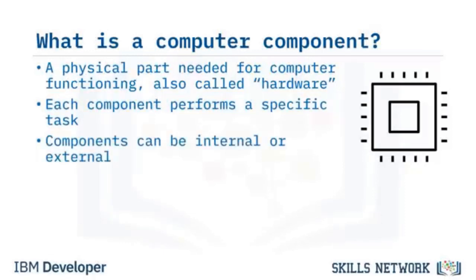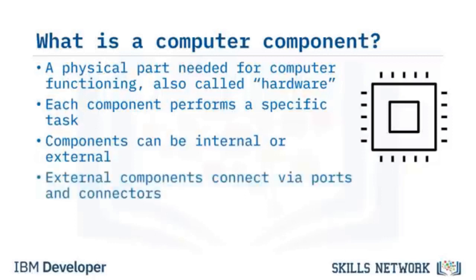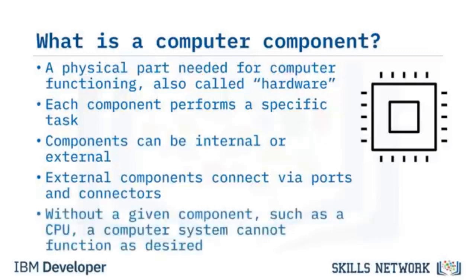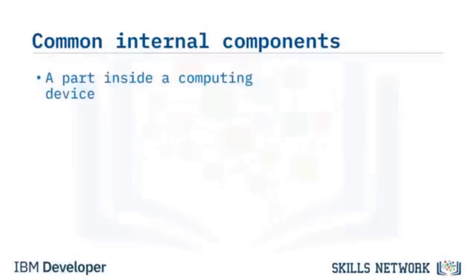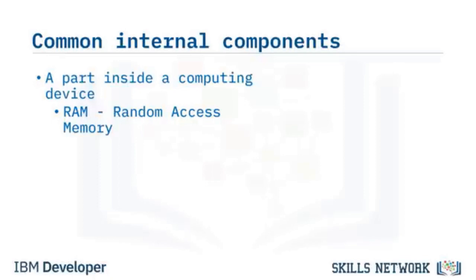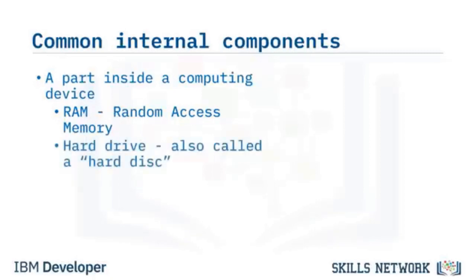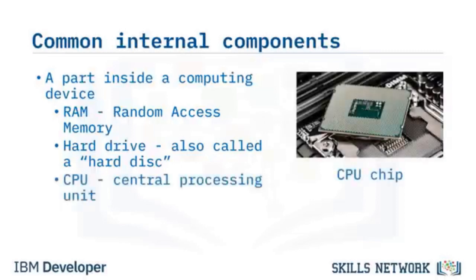Components can be internal or external. External components connect via ports, which are openings on the sides of a computer. An internal component is a piece of hardware inside the computer. Examples include RAM, the computer's temporary working memory; the hard drive, which is permanent storage; and the CPU, which does all math calculations and is often called the brain of the computer — the faster the CPU, the more tasks the computer can handle.